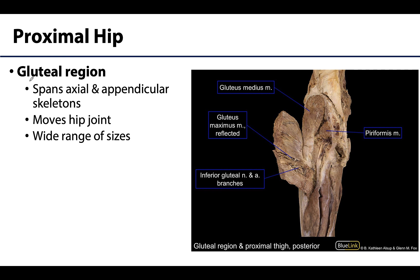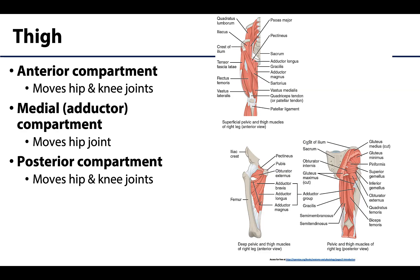The muscles in the gluteal region will vary greatly in size, with the larger muscles being more superficial. The gluteus maximus is the best example, and the deeper muscles are considerably smaller — the piriformis and muscles around this region. There is much variation in these muscle sizes.